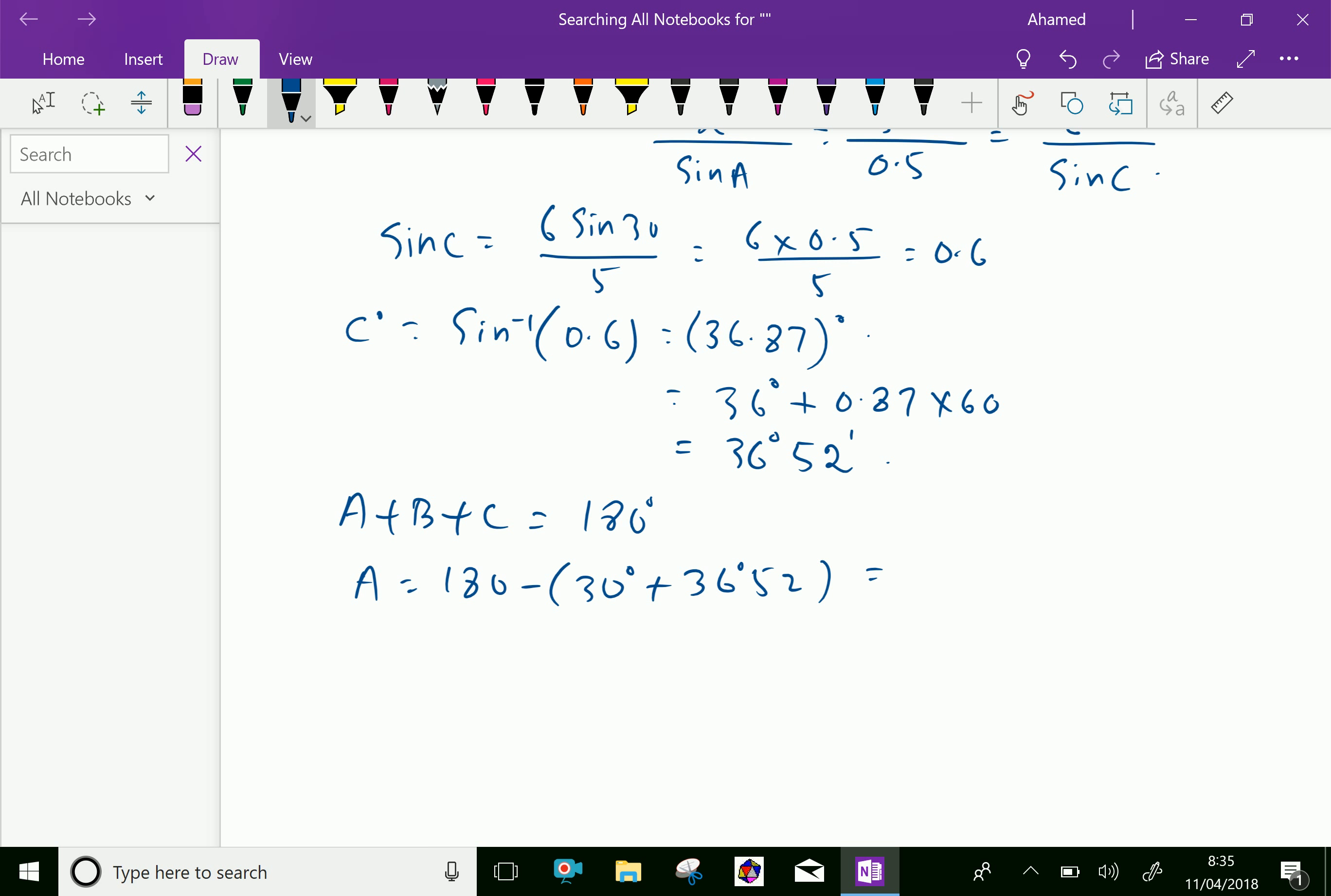Therefore, angle A equals 180 minus angle B, which is 30 degrees, minus angle C, which is 36 degrees 52 minutes. We can get the value as 113 degrees and 08 minutes.